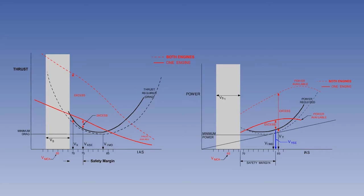On small twin-engine aircraft, VYSE is marked on the airspeed indicator by a blue radial line and is referred to as blue line speed.